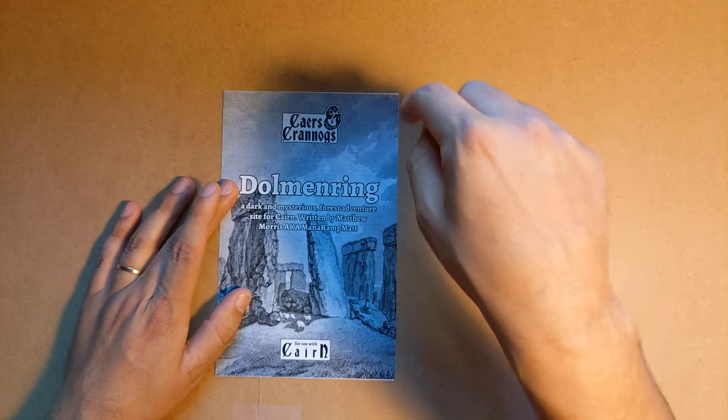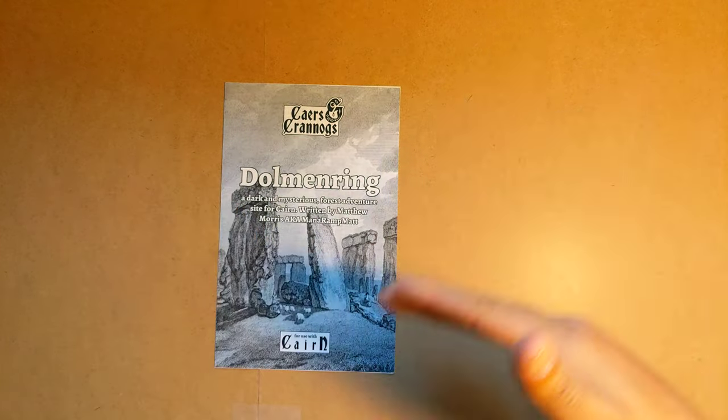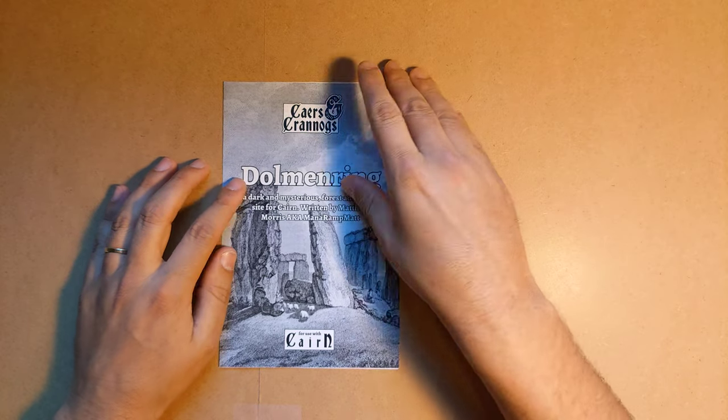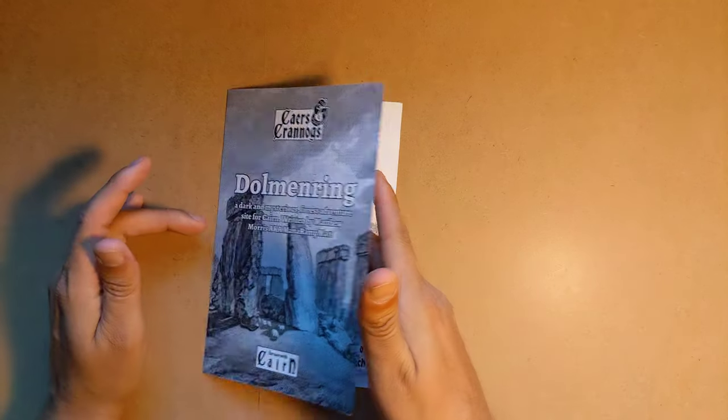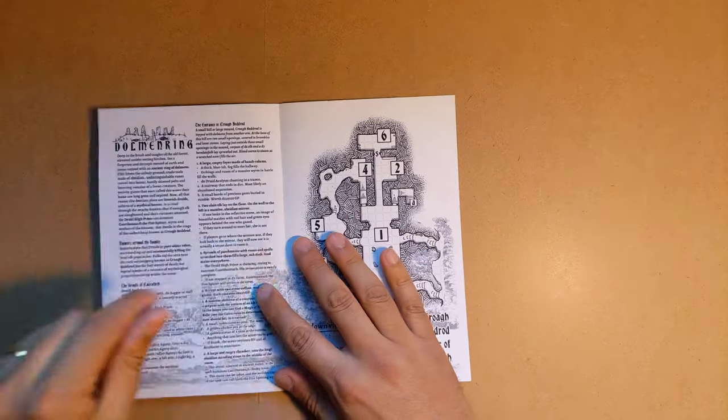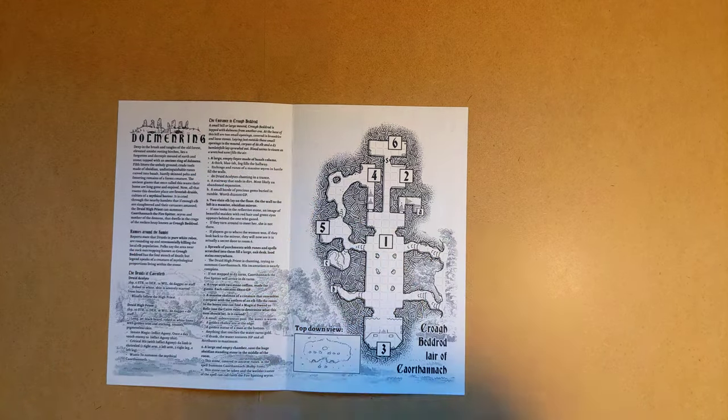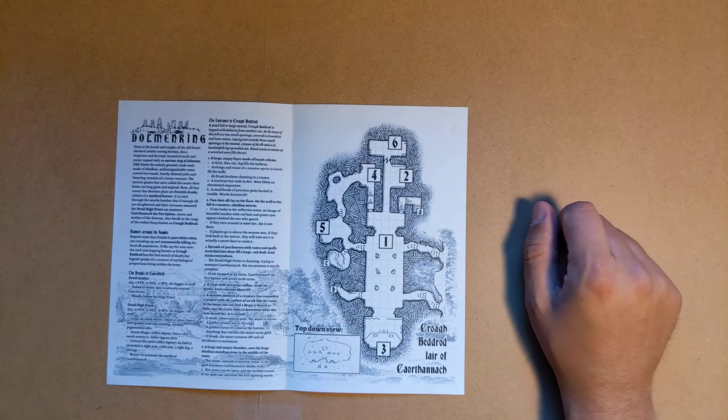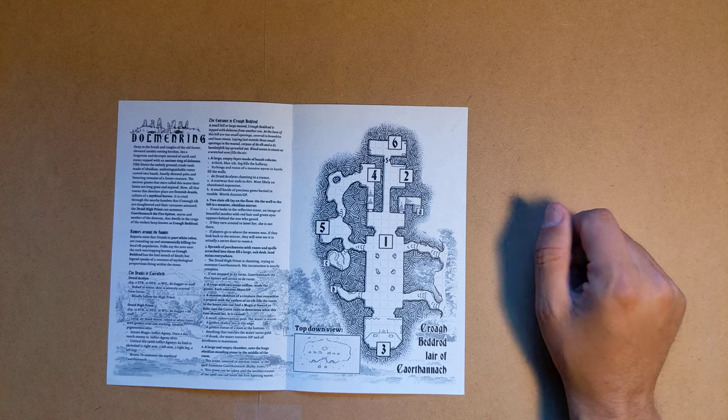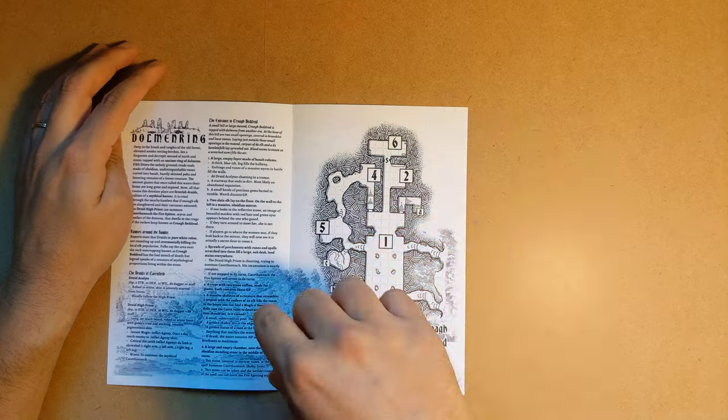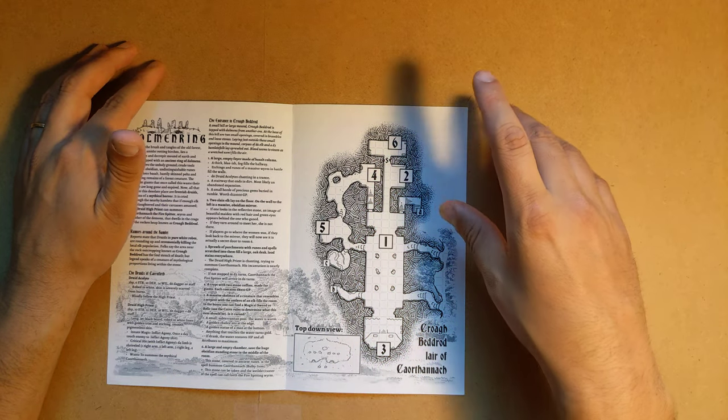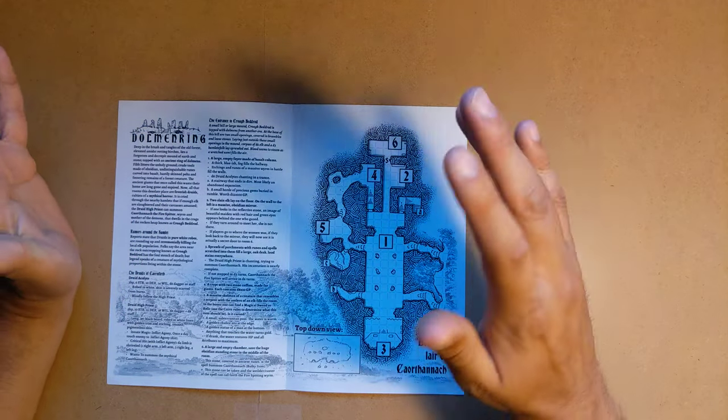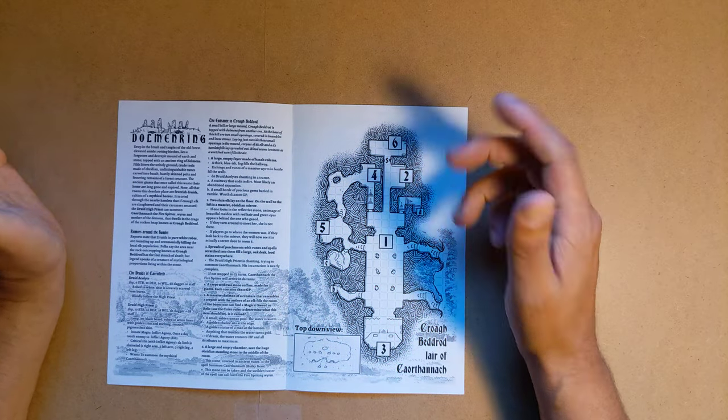Next is Cares and Curnogs, which is a zine series by Matt Morris, also known as Mana Ramp and Matt. This is just a tiny little pamphlet. It's part of that Cares and Curnogs zine series, which you can get from Itch or from LFOSR store. It's a dungeon crawl through a ring of dolmens, and there's a barrow full of druids that are evil, and I guess they're ecstatic or feverish or something.